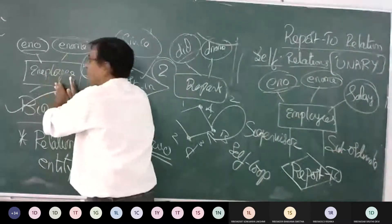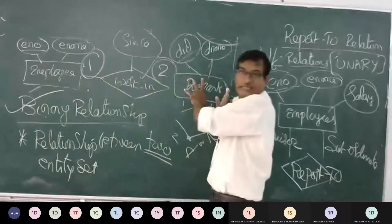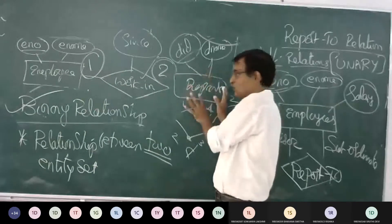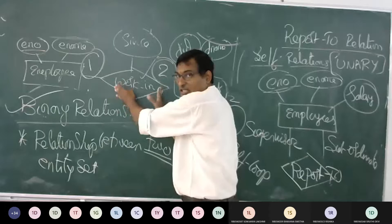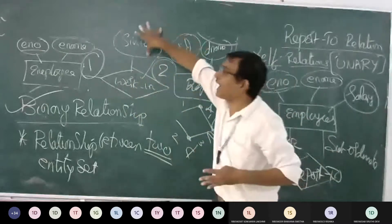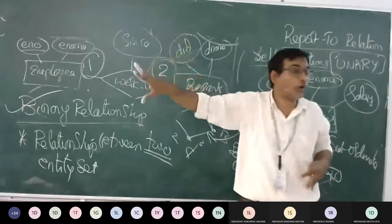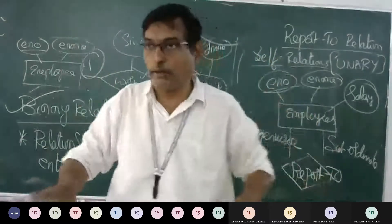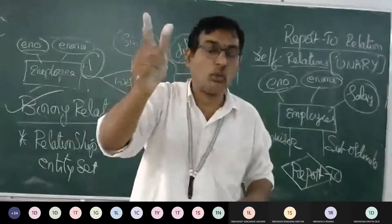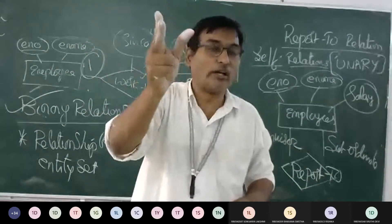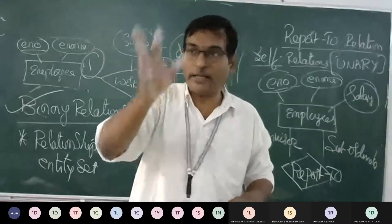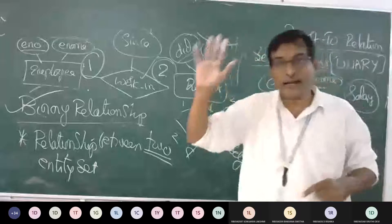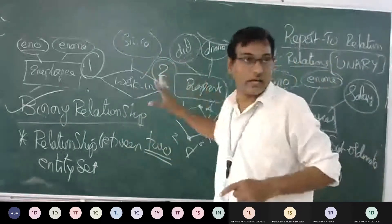If employee is an entity set and department is an entity set, we need to make an association — that is done with a relationship. If the relationship has some attributes, it is called a relationship set. The five terms coined: one — relation, two — relationship set, three — unary, four — binary, five — ternary. These are the five types of relation and relationship items in ER diagrams.